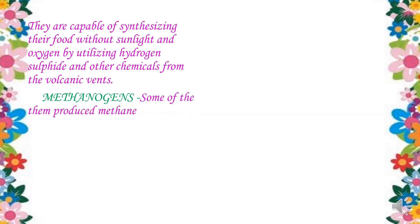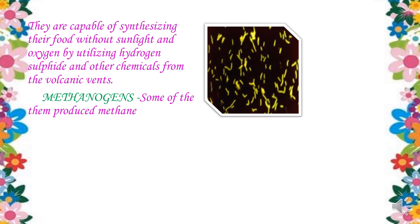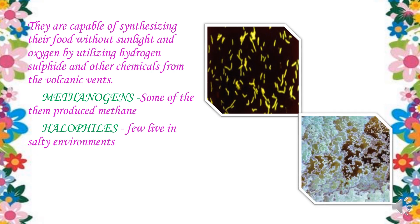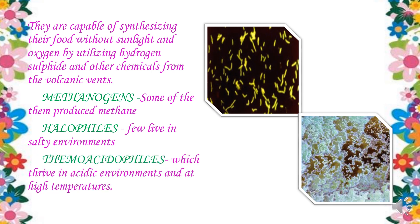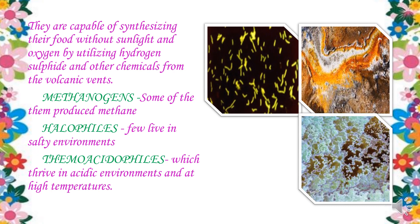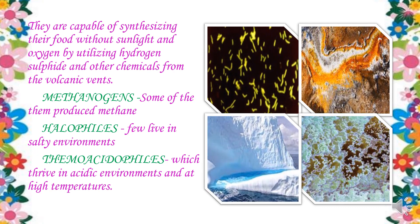Accordingly, these extremophiles can be classified into types. Some produce methane and are called methanogens — the Archaea responsible for producing methane. Some are called halophiles, which can grow in salty environments. Then there are thermoacidophiles, which thrive in acidic environments and at very high temperatures, especially near volcanic vents. Some extremophiles can also grow in extreme cold conditions in polar regions.